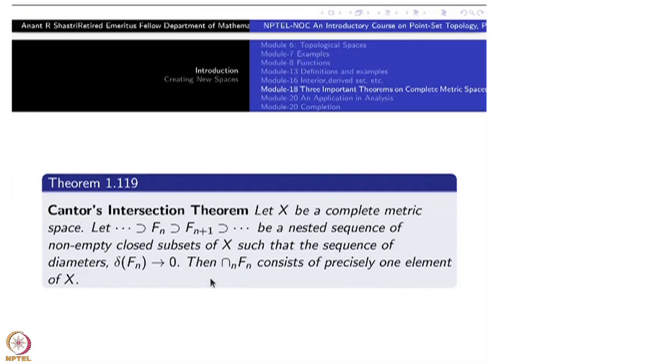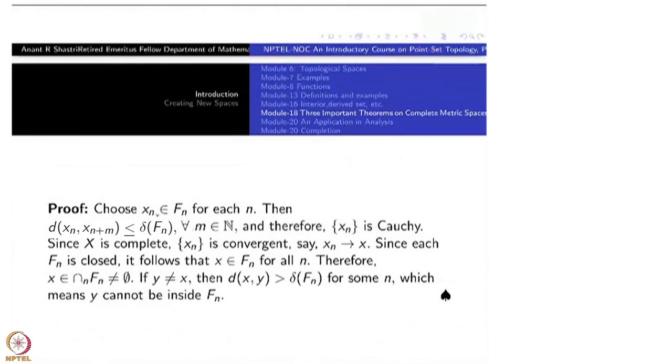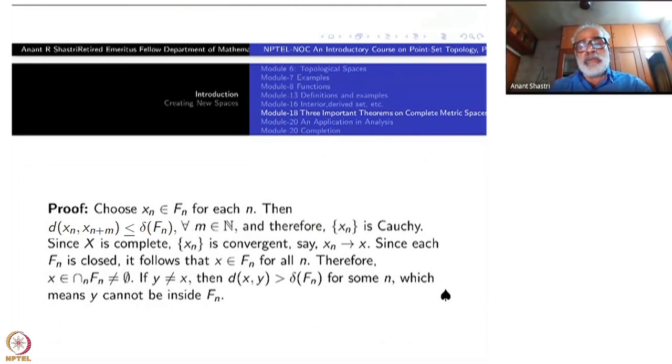The proof is surprisingly very simple. All that I do is, F_n's are non-empty, so pick up x_n belong to F_n for each n. Then look at this sequence d(x_n, x_{n+m}). It is less than delta F_n because both of them are inside F_n. The delta is the diameter, supremum of all such numbers where x and y range over F_n. Therefore, the distance between x_n and x_{n+1} becomes less than delta F_n. But delta F_n itself tends to 0.